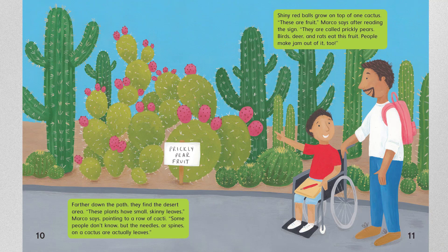Further down the path, they find the desert area. "These plants have small skinny leaves," Marco says, pointing to a row of cacti. "Some people don't know, but the needles or spines on a cactus are actually leaves." Shiny red balls grow on top of one cactus. "These are fruit," Marco says after reading the sign. "They are called prickly pears. Birds, deer, and rats eat this fruit. People make jam out of it, too."